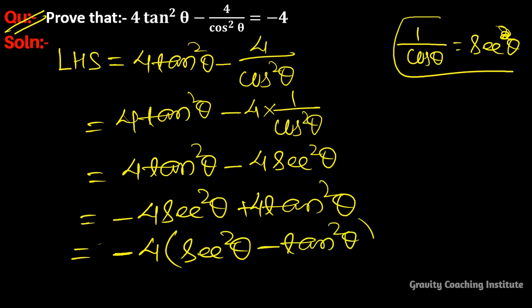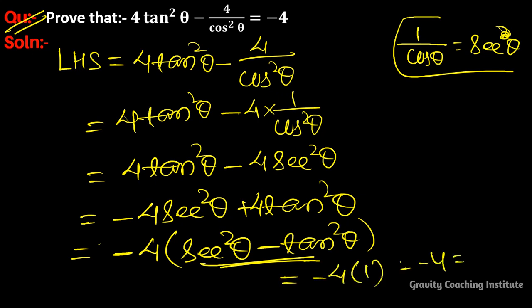We know that the formula sec²θ - tan²θ is equal to 1, so the result is -4 × 1 = -4, which is hence proved.